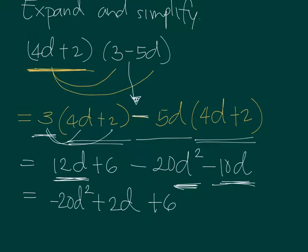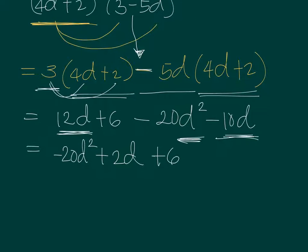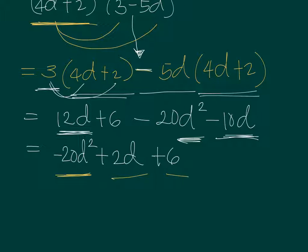Note how the terms are arranged by convention. We always start with the highest exponent of the variable — in this case D squared — followed by D, and then the constant value. That is how you expand an expression.